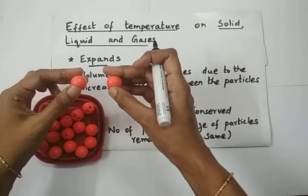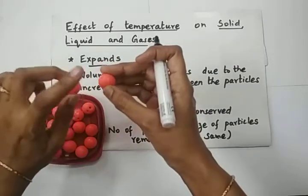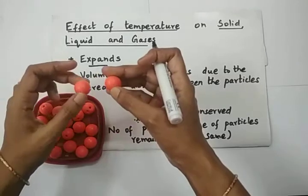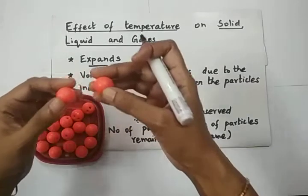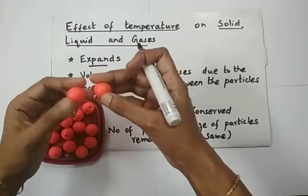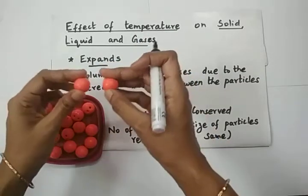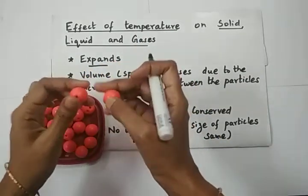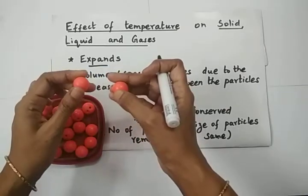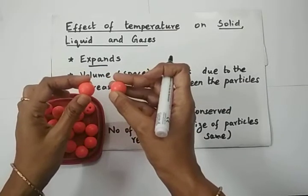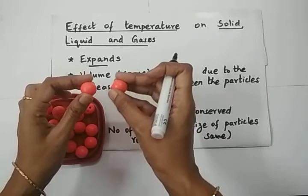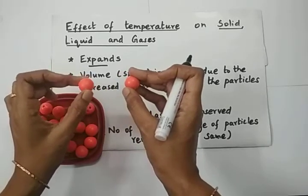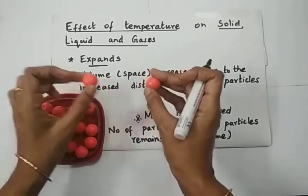What is kinetic energy? It is the energy possessed by the particle due to its motion. The heat that is supplied will make the particles gain energy and they will start vibrating. Already they will be in vibration, but when you supply heat, they will gain more energy and they will start vibrating more vigorously — vigorously means very fast. They will start moving a little away from each other, that is apart from each other.